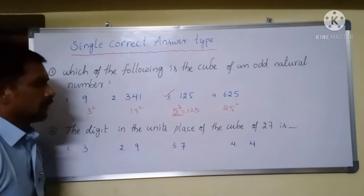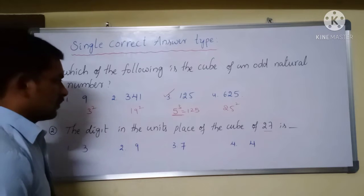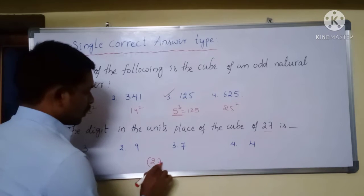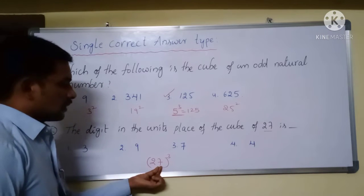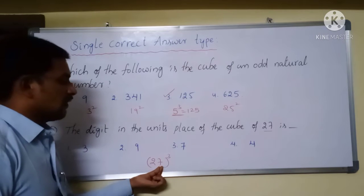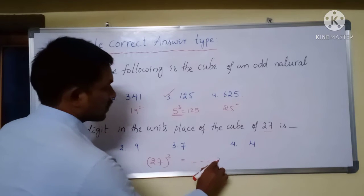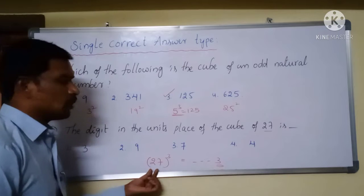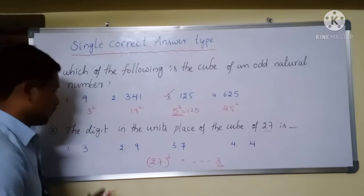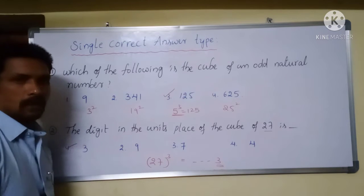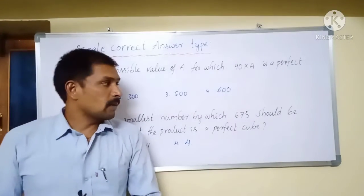Coming to the second problem: the digit in the units place of the cube of 27. We know the property — 27 ends with 7, and a number ending with 7, its cube value ends with 3. This is a property we discussed in the previous class. So the solution is option number 1.